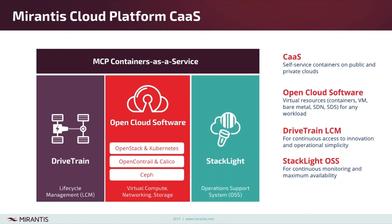This slide gives a pictorial recap of the MCP architecture. The three boxes on the bottom are the traditional MCP elements. Drivetrain is our name for our lifecycle management system — it provides deployment, lifecycle management, day-two operations, patching, and upgrades for all the open cloud software we manage, including on bare metal: OpenStack, Kubernetes, SDN, SDS, and so on. In the containers-as-a-service context, drivetrain under the hood is what's going to be deploying and managing Kubernetes consistently. The box on the right is Stacklight — our name for our OSS operational support systems tooling. This provides logging, monitoring, alerting, and some operational portals. Originally built for the open cloud infrastructure software, we will in the future be extending this to cover Kubernetes and potentially Kubernetes workloads running as part of this containers-as-a-service offering.